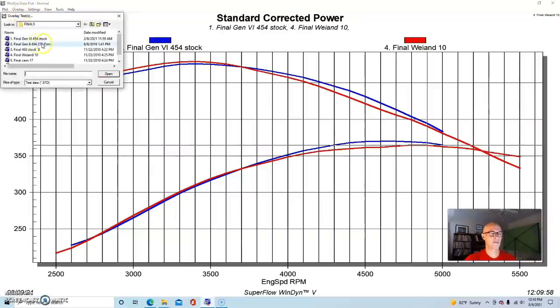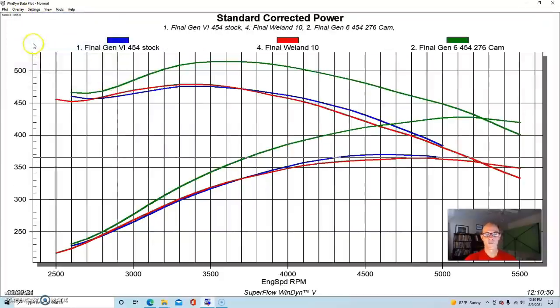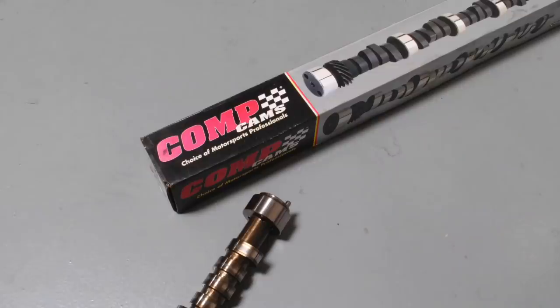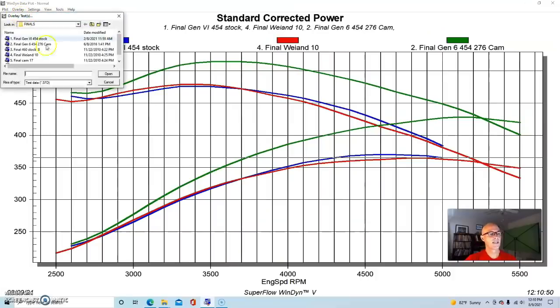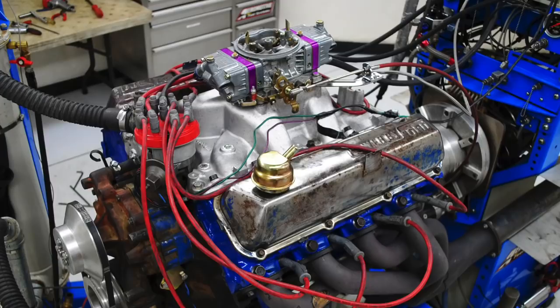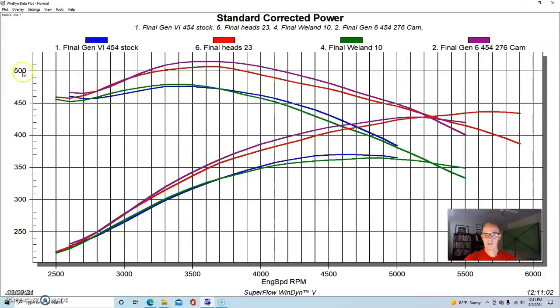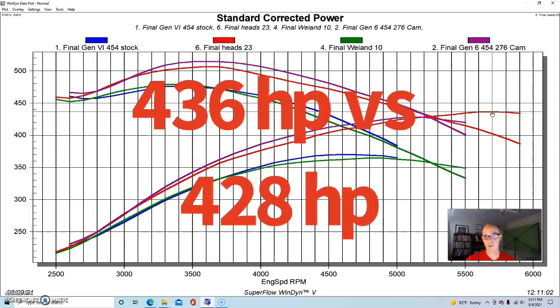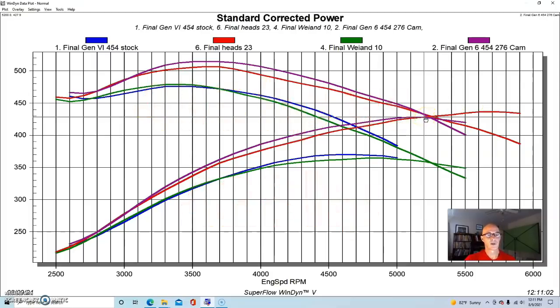But let's take a look and see how they did in modified form. So this is our 454 with the Xtreme Energy camshaft. And here is our modified 460 with the worked over heads and camshaft. And again we have very comparable power curves. With the Ford it made 436 horsepower and the Chevy made 428.